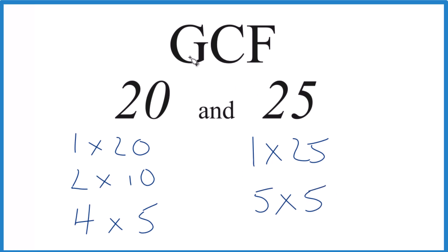So for the GCF, we're looking for the greatest common factor. 1 is a common factor, but it's not the greatest because we could also find 5, and that is the greatest common factor. It goes into 20 and 25 evenly.